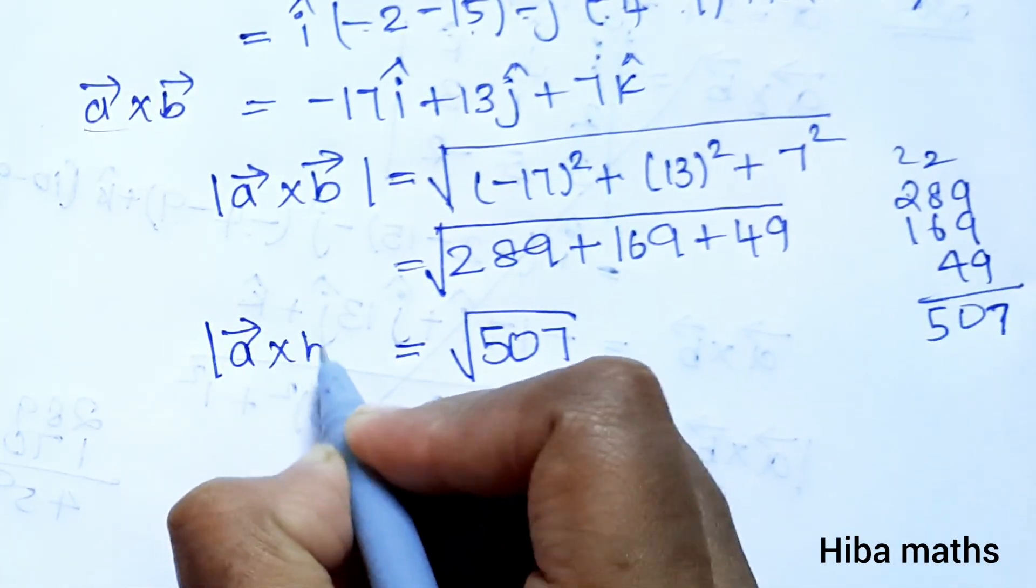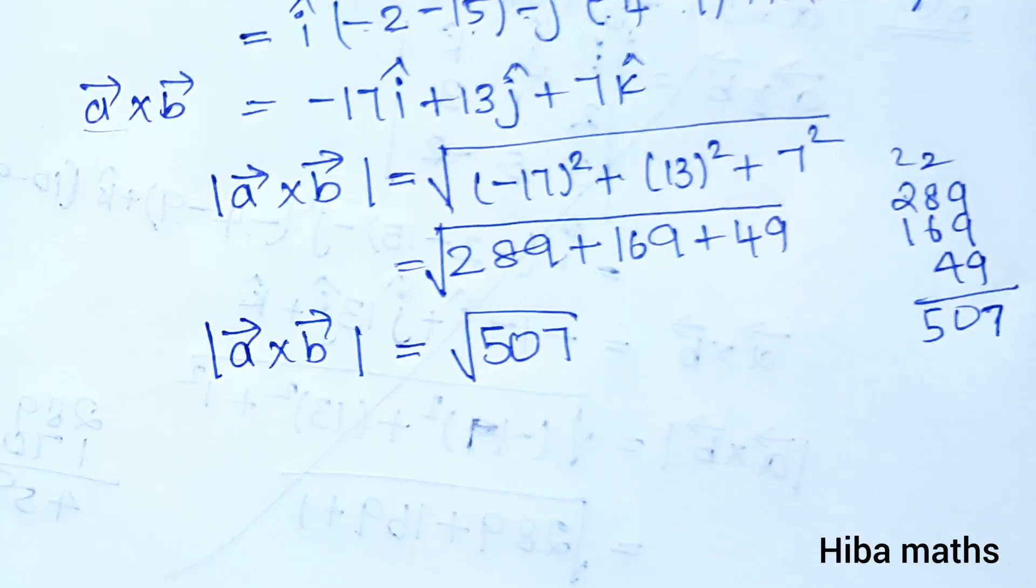This is the magnitude of A vector cross B vector. I hope you understand. Thank you so much for watching.